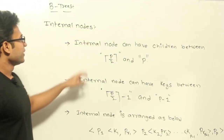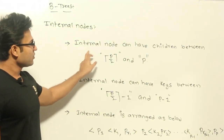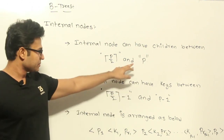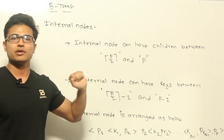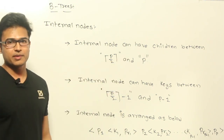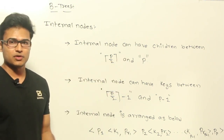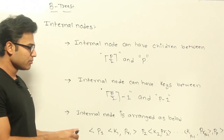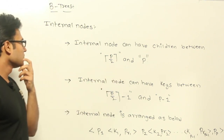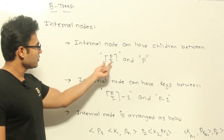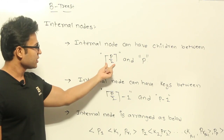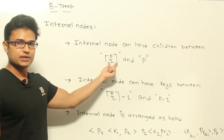Let us see internal nodes. An internal node can have children between P/2 and P. How to decide this P? We shall see with an example how to find out the value of P. But assume that already we have found out the maximum number of children that can be present for any node. Then under that assumption, the minimum number of children are also computed this way: P/2 and P.